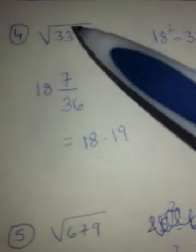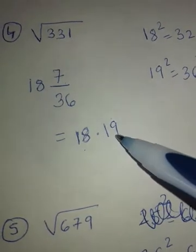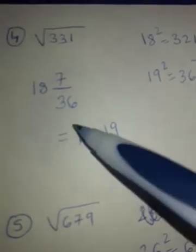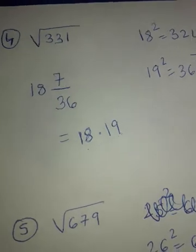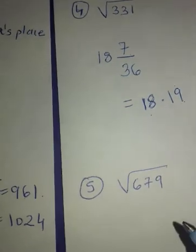It comes out to 18.19. If you find the square root using calculator, you will get the answer very close to this number. I hope you are loving this trick. Very innovative kind of trick. Now let's move to next number.